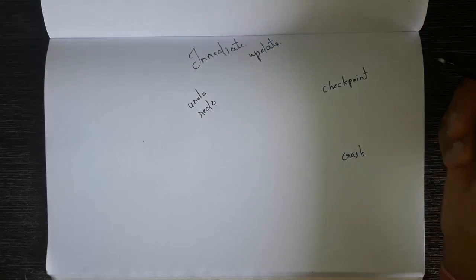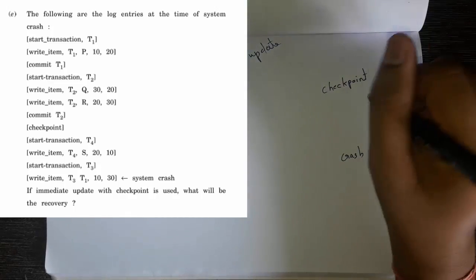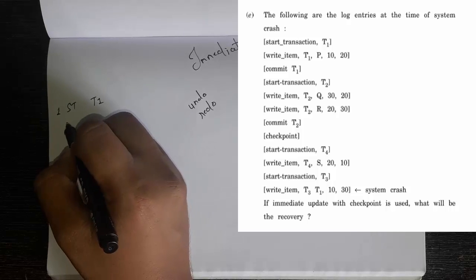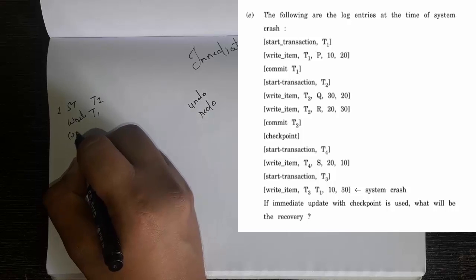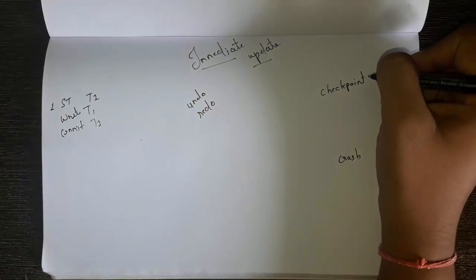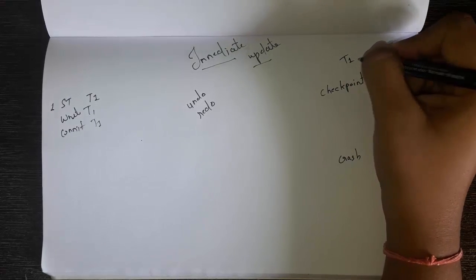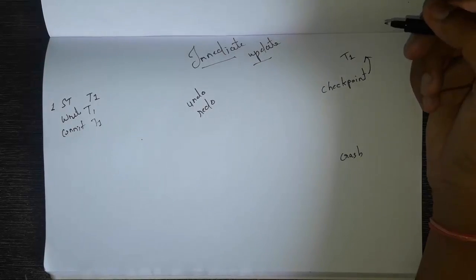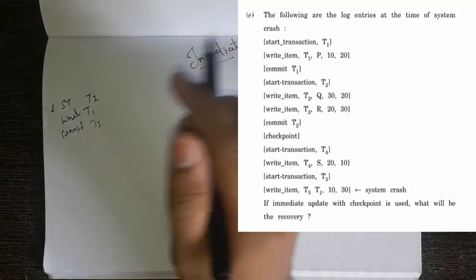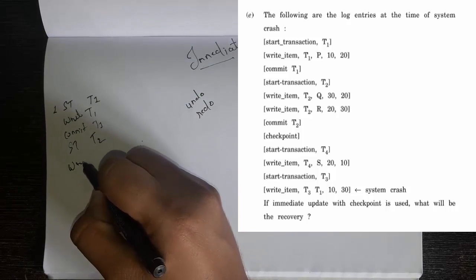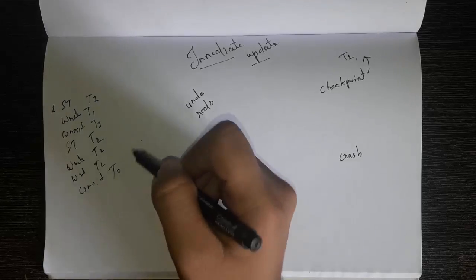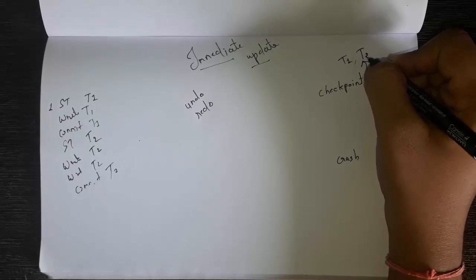You can see in the question there are 2 transactions committed before the checkpoint. In the first line it is written start transaction T1, then there is a write operation T1, then a commit T1. In the immediate update technique, if a transaction is committed before the checkpoint, you have to write an arrow. T1 is committed above the checkpoint. Similarly, T2 has a start, two write operations, and a commit before the checkpoint, so write T2 as well.